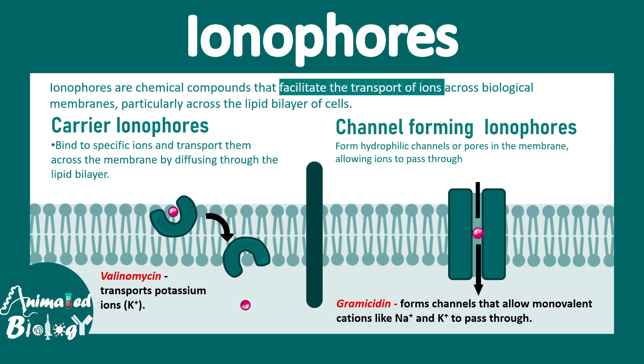These kinds of ionophores don't have much specificity, unlike ion channels. An ion channel has high specificity — it won't pass sodium versus potassium through the same channel. But in the case of ionophores, they may pass all cations non-specifically.